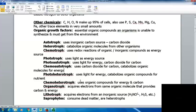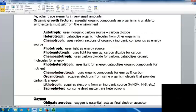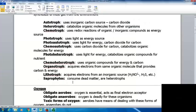They catabolize organic molecules for energy. Photoheterotrophs use light as energy and catabolize organic compounds for nutrients. Chemoheterotrophs use organic compounds for energy and carbon. Organotrophs acquire electrons from the same organic molecules that provide carbon and energy. Lithotrophs acquire electrons from inorganic sources. Saprophytes consume dead matter and are considered heterotrophs.